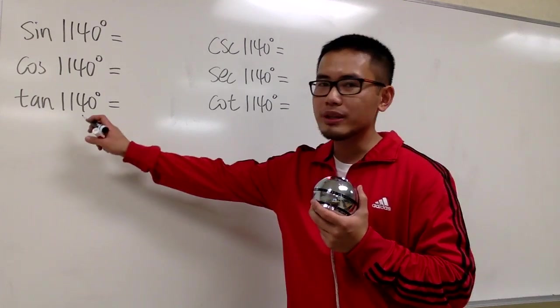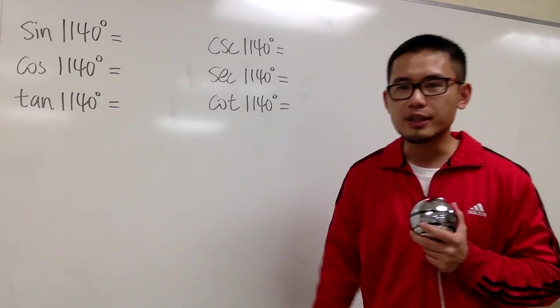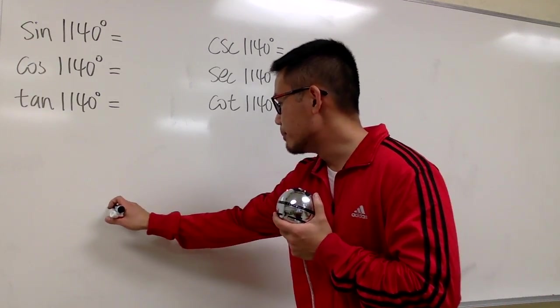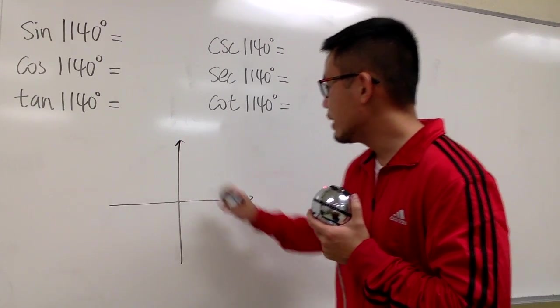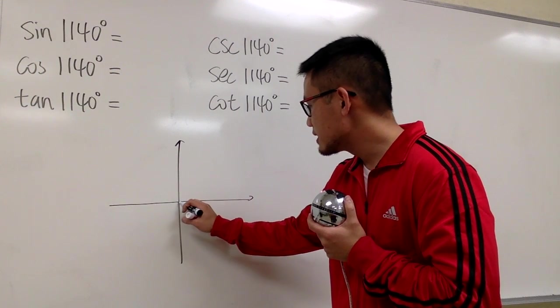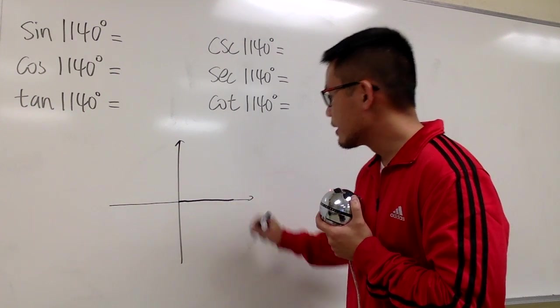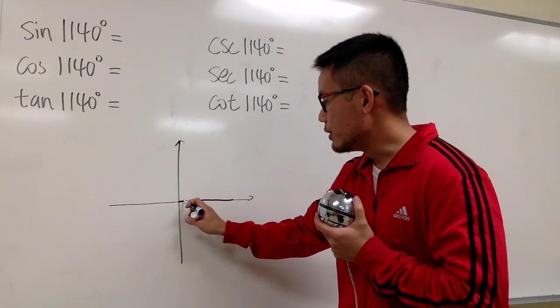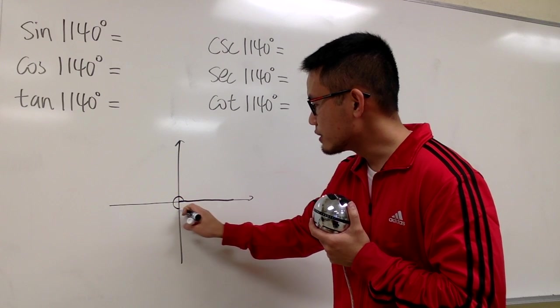Alright, so let's go ahead and draw the angle 1140 degrees. And right here, you know it's a big angle, so you have to keep track carefully. And we have to do it on the xy plane, right? So, start from the positive x-axis right here. And now let's just keep track. We know one revolution is 360 degrees, right?